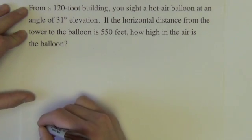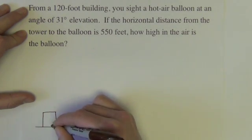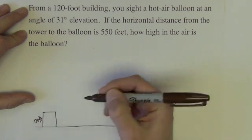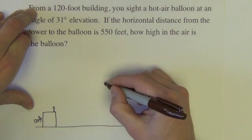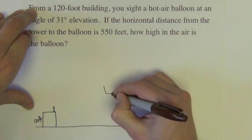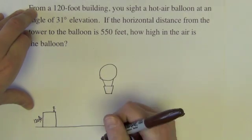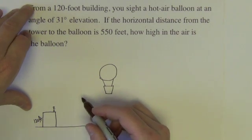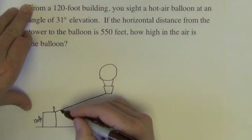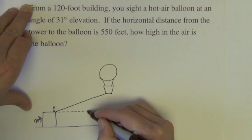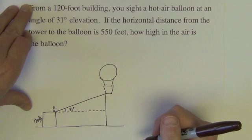Okay, so let's just draw this out here. Here's the ground. Here's my 120-foot building. And so then this is me here. And there is a hot air balloon. Let's see if I can draw. There's my hot air balloon. And so at an angle of 31 degrees elevation from where I'm at, I spot that hot air balloon.